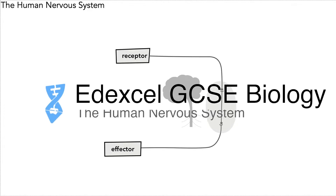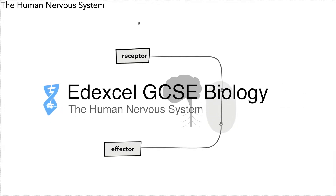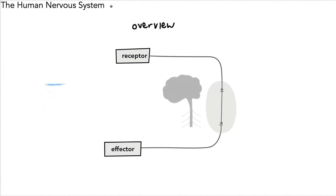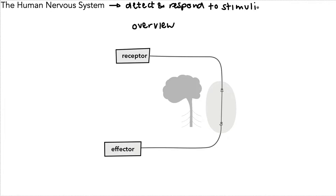Hello, today we're looking at an overview of the human nervous system. Firstly, what's the job of the human nervous system? It is to detect and respond to stimuli — stimuli being the plural for stimulus.